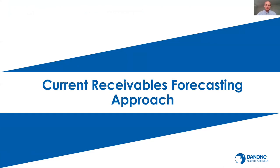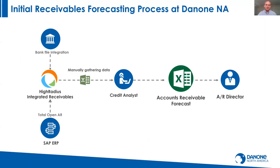Our previous forecasting process was quite involved and manual. We took inputs from different data sources: bank files for cash-in, our High Radius system — we'd previously been customers for cash app, collections, and deduction modules — and our ERP system, which is SAP. We pulled all that data into Excel, and a dedicated credit analyst would manually gather it and produce a cash forecast. It was very time-consuming, inefficient, and 100% manual.